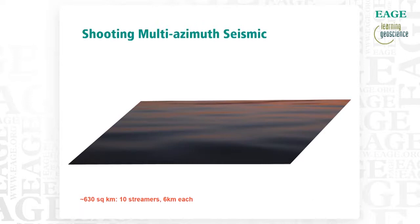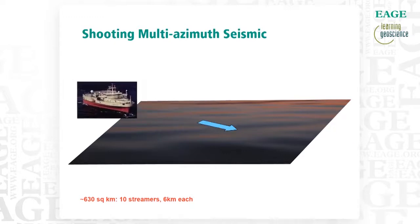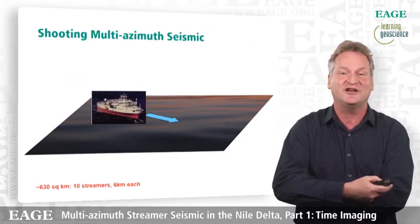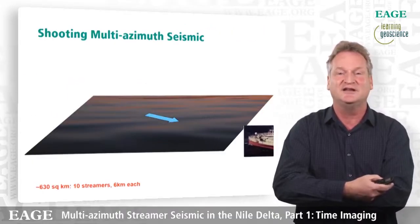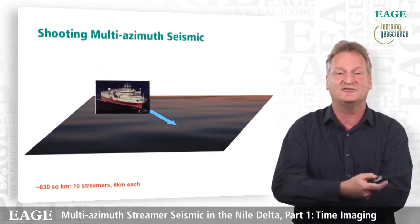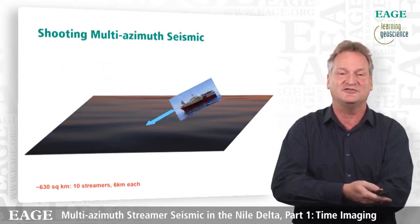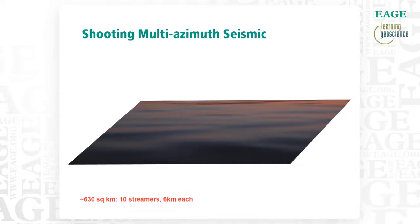So how do you acquire multi-azimuth seismic? It's actually quite simple. You get a vessel, put the streamers out as you would for a regular seismic survey, and you shoot it in different directions. In this case over Raven, we shot it in six different directions — about 630 square kilometers of seismic with a streamer length of about 6 km.